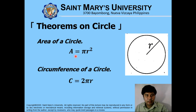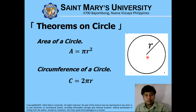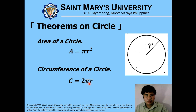The area of a circle is defined as pi R squared, or in terms of diameter, pi D squared over 4. The circumference of a circle in terms of radius is 2 pi R, and in terms of diameter, since the diameter is twice the radius, it is pi D.